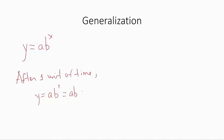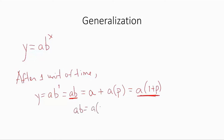Another way of looking at this is that after one unit of time, the final population will be a plus whatever you had at the beginning times the growth or decay factor p. We factor out the a and see that this is just a times (1 plus p). Combining these two views — since a times b equals a times (1 plus p) — we see that b is indeed 1 plus p. Thank you.